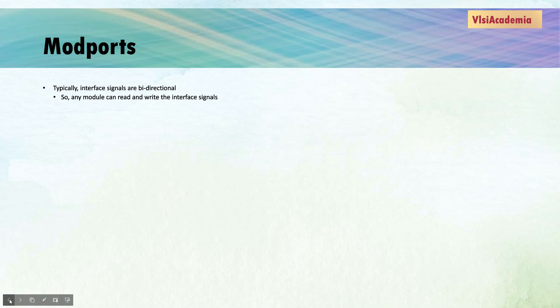Let's take an example of a transmitter and a receiver module. The transmitter would send data over the connection and the receiver would read the information. So if we want to connect these transmitter and receiver modules using an interface, the interface signals should be used as an output in the transmitter since it will send the data, and those interface signals should be used as an input in the receiver since the receiver would read the information. In a practical scenario, we would want to specify that certain signals in an interface should only be used as inputs or outputs in a certain module. We can achieve this by using modports in System Verilog.